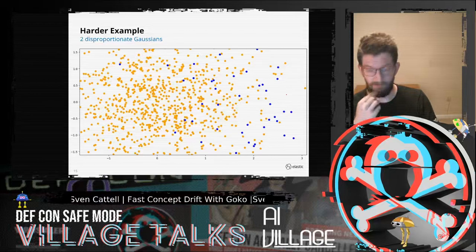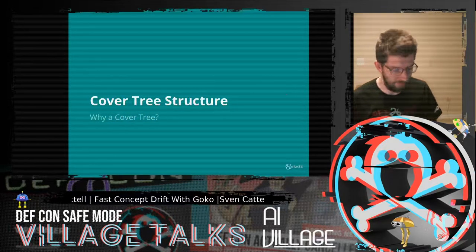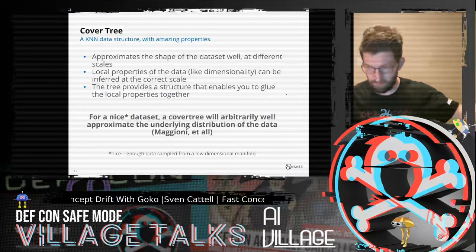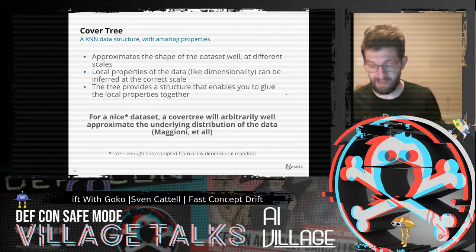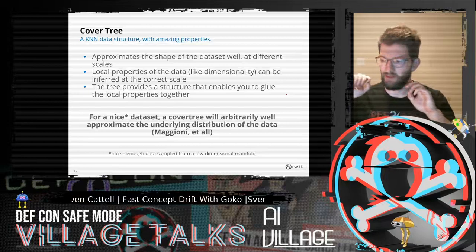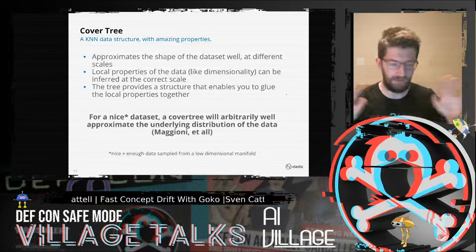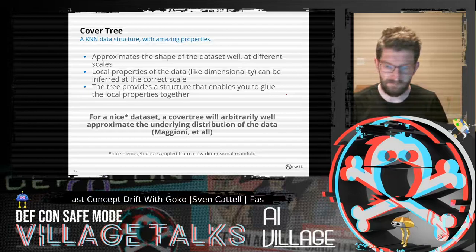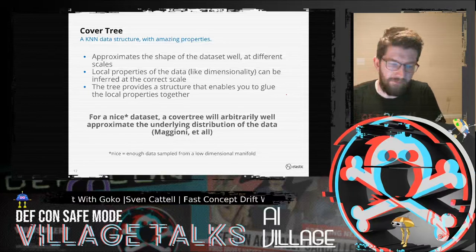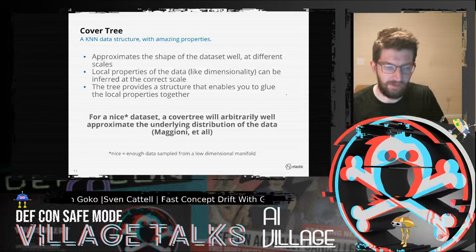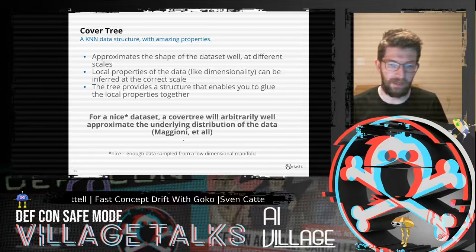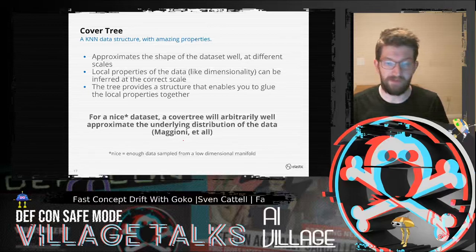Why use a cover tree? The key takeaway is that it's a K-nearest neighbors data structure — there are many like it: KD trees, B trees, K-means trees. But the cover tree has this wonderful property: in 2016, Mario Maggioreni and Wendy Glau proved that it can arbitrarily well approximate the underlying distribution of the data.